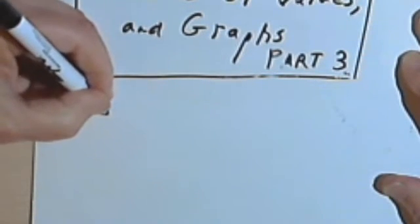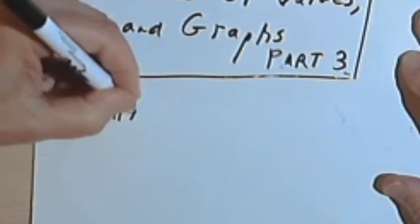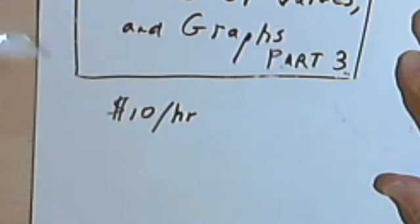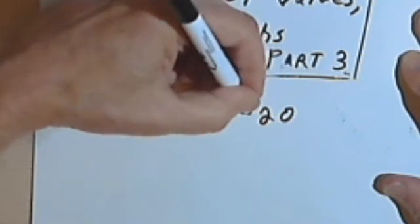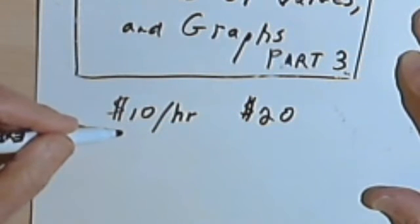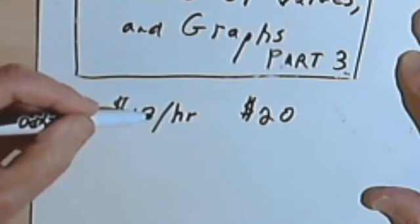So let's say you've got this situation. You've got a job and the job pays you $10 per hour. Every hour that you work, you make $10. And you also have $20 in your pocket. And we want an equation that's going to show how much money you have, both the amount of money you've earned and the $20.